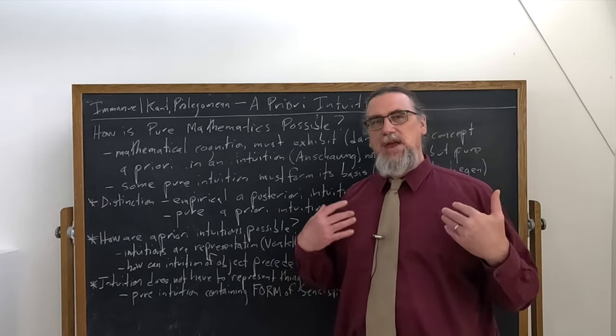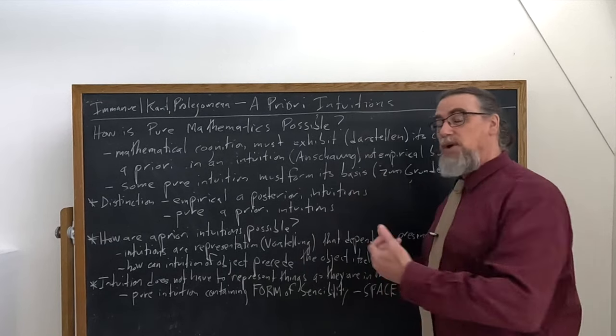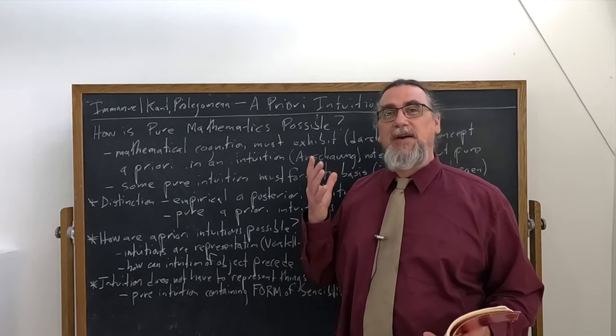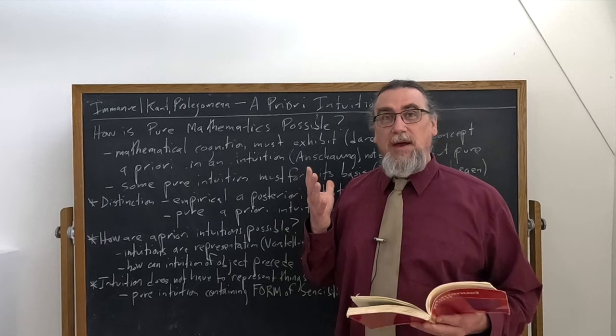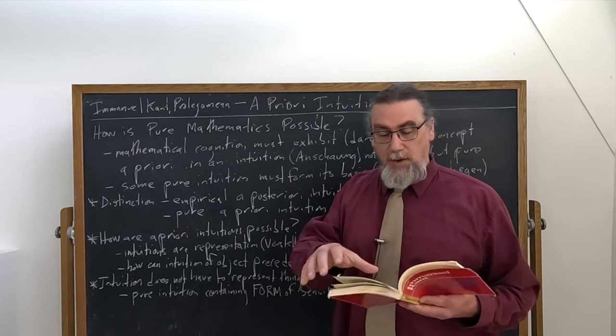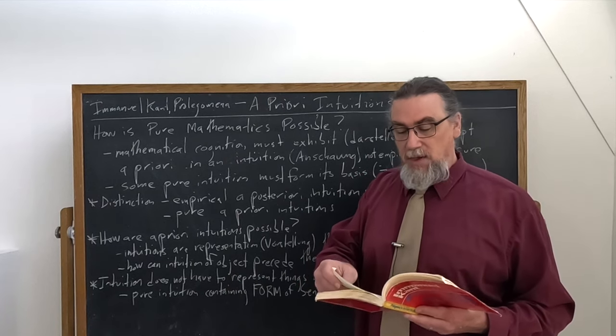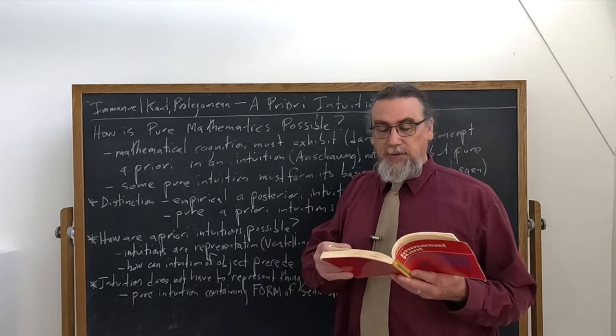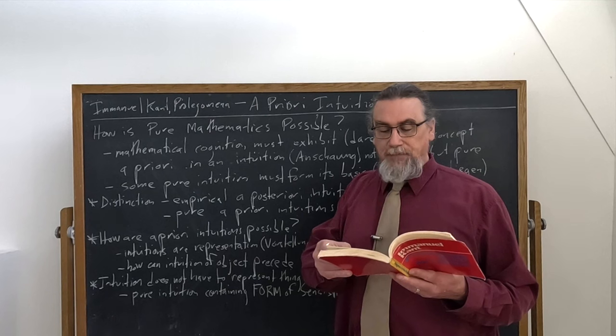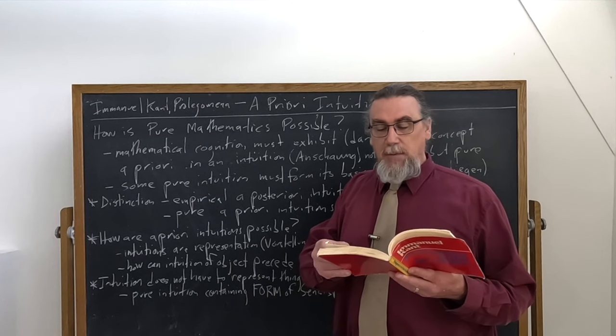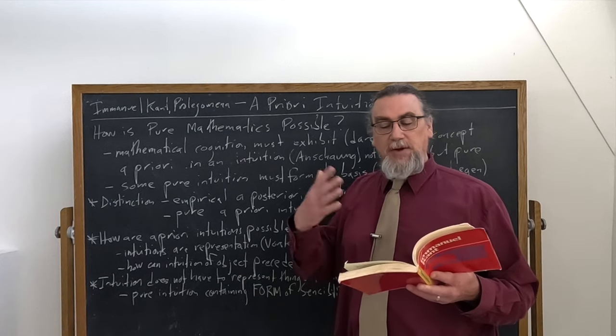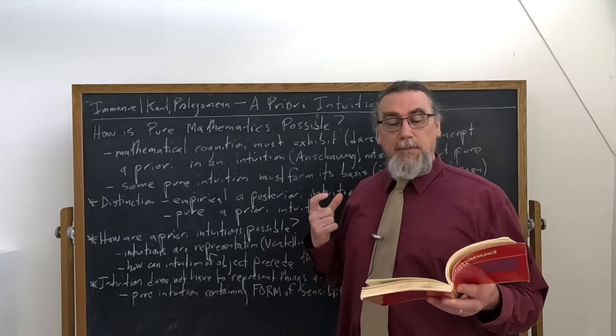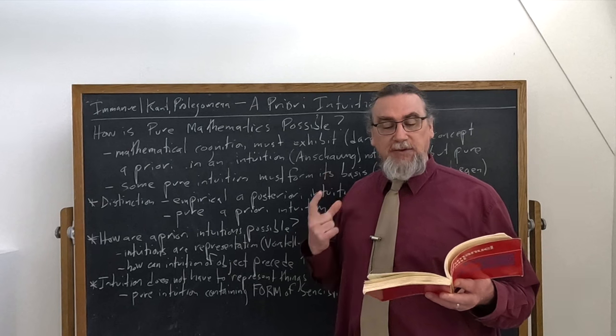So if we can answer that question, then we can say that a priori intuitions are indeed possible, or even actual. And so here's Kant's solution here at this point. He says that if our intuition had to be of such a nature as to represent things as they are in themselves. So things is Dinge, and we're going to ultimately get to the Dinge an sich, the thing in itself. Things as they are in themselves, as they have being, as they exist in themselves. And intuition doesn't have to give us that.